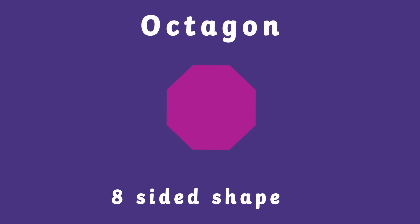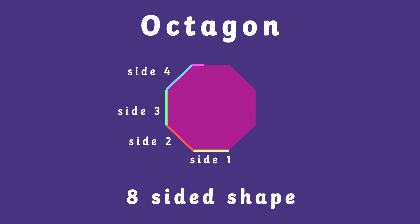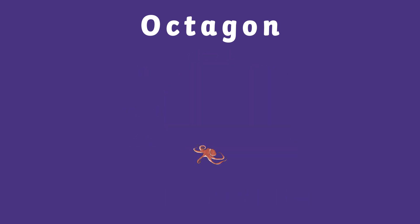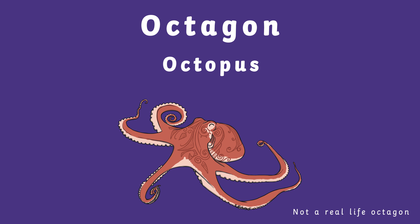An octagon is an eight sided shape. To remember this shape, think that an octopus has eight legs.